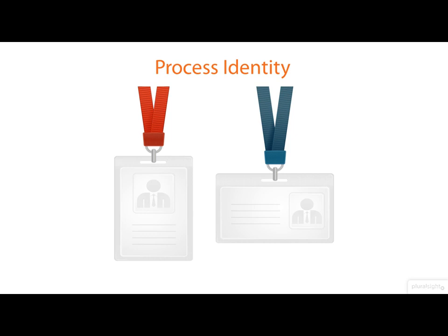One of the pieces of context a process carries around with it is an identity in the form of a user ID and a group ID. The process is running on behalf of a particular user. If I logged in as user Chris and run a program, it runs with my identity. Now some identities correspond to actual people, but a quick glance through the password file will show that many exist simply to give an identity for some program or service to run with, and against which access control checks can be made.